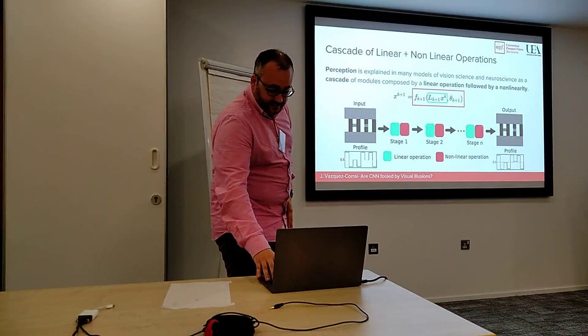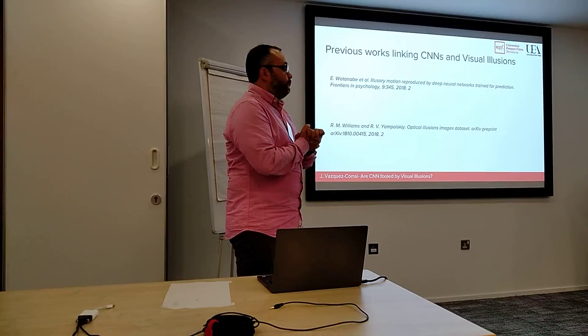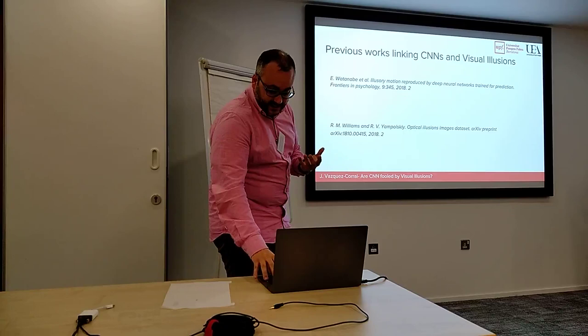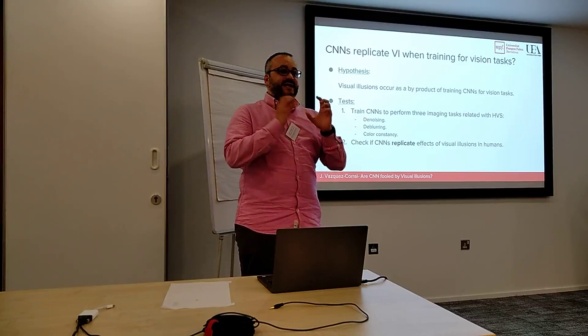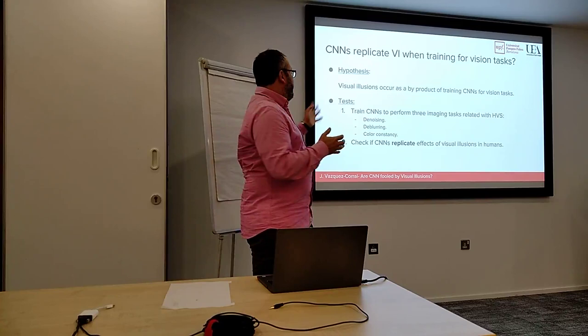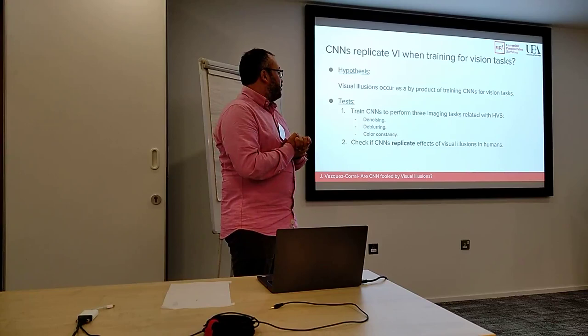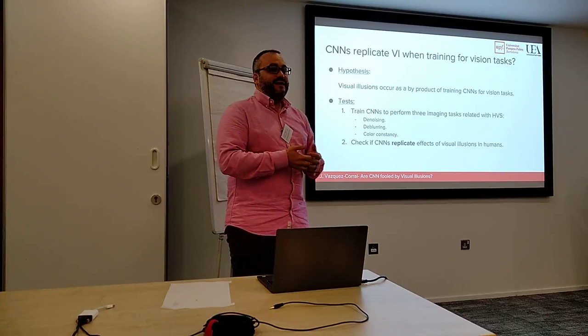Looking at the literature, we realized there were not many works linking CNNs and visual illusions. We thought there was something to investigate: what happens if we train CNNs for vision tasks that we are used to perceiving? If we do that, will visual illusions also appear as a byproduct? We trained CNNs on three different imaging tasks — denoising, deblurring, and color constancy — to check if training for these tasks allows us to replicate visual illusion effects.